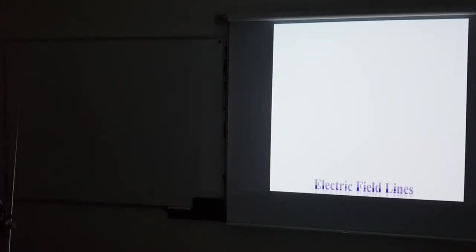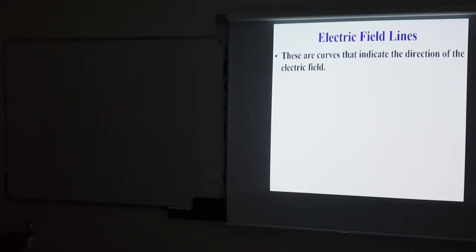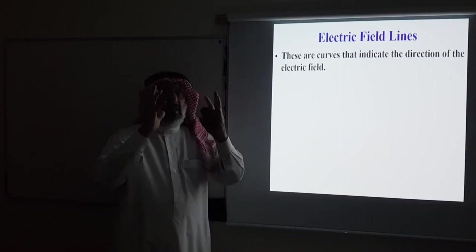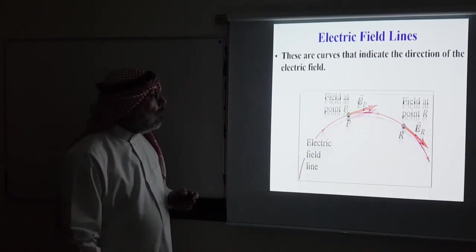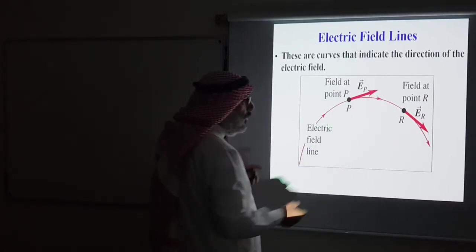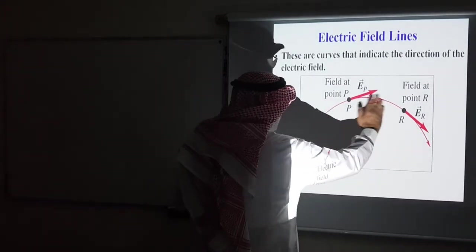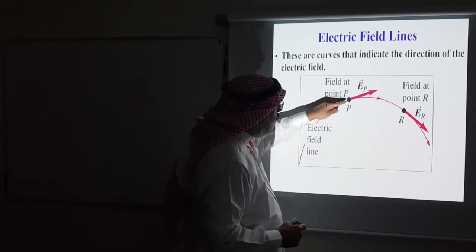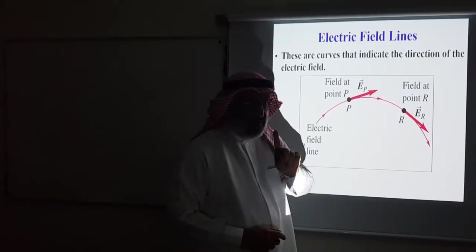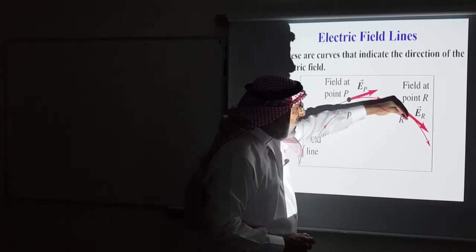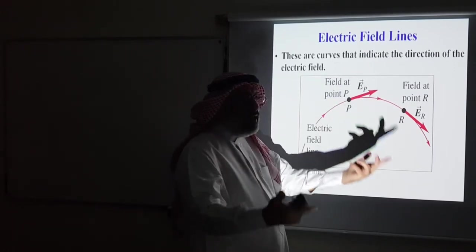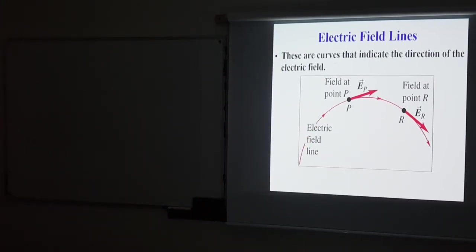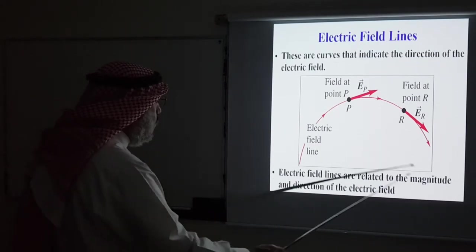Now let us talk about electric field lines. Electric field lines are curves that indicate the direction of the electric field — they are a nice way to visualize the field pictorially. The direction of an electric field line's arrow tells us the electric field direction at that point, because the electric field is tangent to the electric field line at any point in space. The more lines we have, the stronger the electric field. So field lines give us a fair idea about both the magnitude and direction of the electric field.